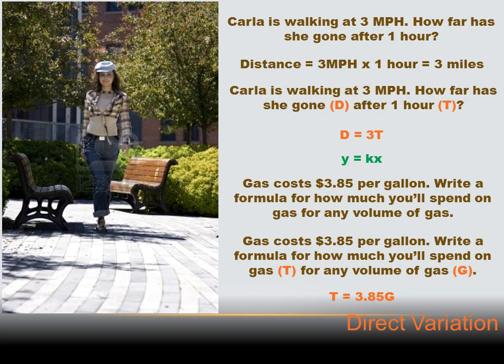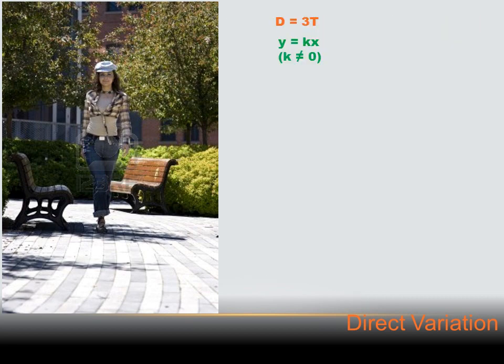If you think about it, it kind of makes sense. We've got an unchanging constant — three miles per hour — and the more hours we walk, the greater distance we're going to go. The distance increases proportionately to the number of hours walked. Similarly, the more gas we buy at $3.85 a gallon, the more gallons we buy, the higher the total price. So from the Carla walking problem, the equation was D equals 3T, in the format of a direct variation — variable Y equals a constant times variable X. And we talked about the fact that that constant can't equal zero; K has to be a number other than zero.